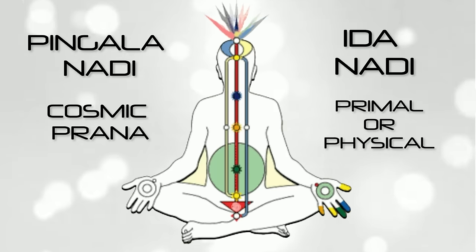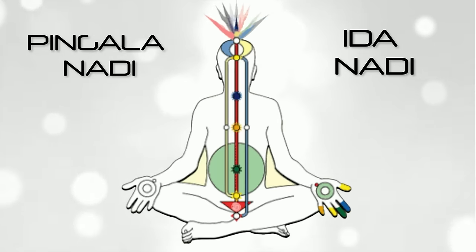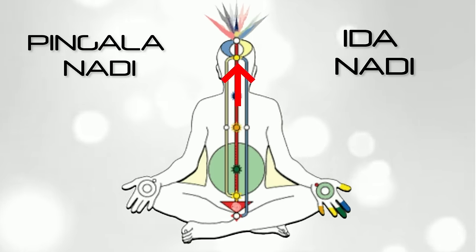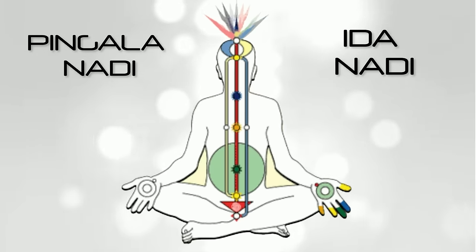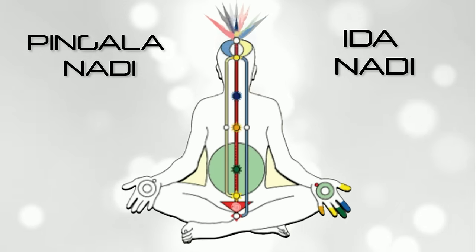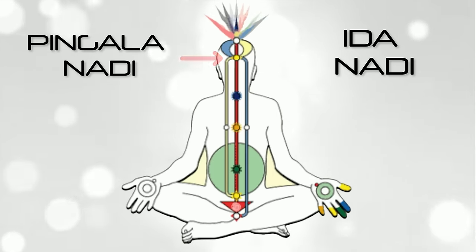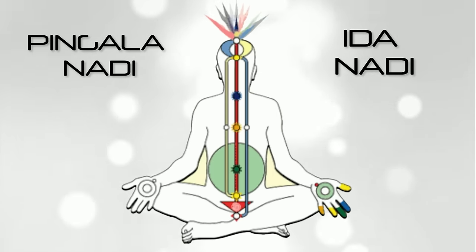The ida carries our primal or physical prana — what we know as sexual energy — and the pingala carries our cosmic prana. Through spiritual effort, preservation of sexual energy, and a desire for god union, the meeting place of these two energies moves higher and higher up the chakras. The higher up this meeting place goes, the more positively charged the crown chakra becomes.